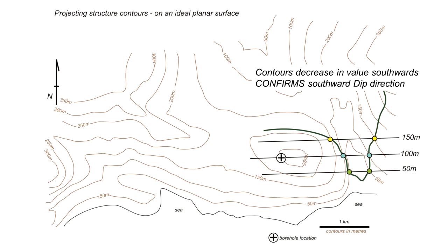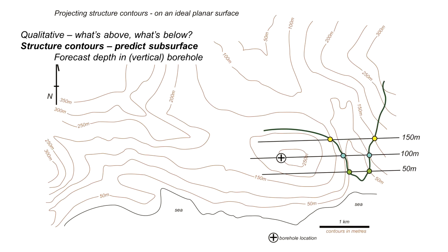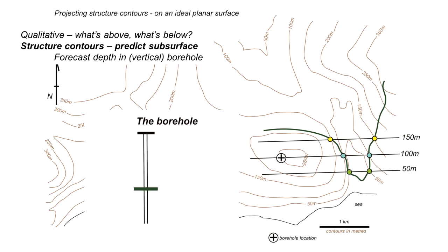Notice that these contours decrease in value southwards from 150 to 50 metres, confirming that the boundary dips southward — consistent with the V-pattern conclusion. Now let's use this to forecast the borehole depth. Sketching a vertical borehole profile, the top of the borehole sits on the 250 metre topographic contour. The 100 metre structure contour passes through the borehole location, so the geological boundary is at 100 metres elevation above sea level — therefore 150 metres down from the surface.